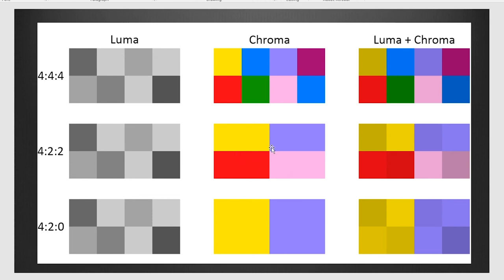As you move up to 4:2:2, this has increased the color depth exponentially — it's going to be a lot better color image. As you get up into like the C200, the Canon C200, or the Sony FS5, you have opportunities of shooting in 4:2:2. Especially if you're attaching an Atomos recorder to your cameras, you're going to get a much higher quality color sampling. And then you get into professional cinema cameras like the RED, shooting 4:4:4 — the Canon cinema cameras, the Alexa — all these cinema cameras sample in 4:4:4, giving you the highest quality possible. Now you know what people mean when they say they're shooting in 4:2:2 versus 4:2:0.